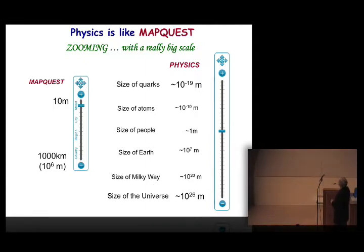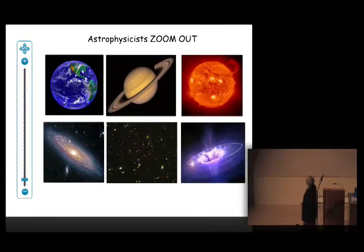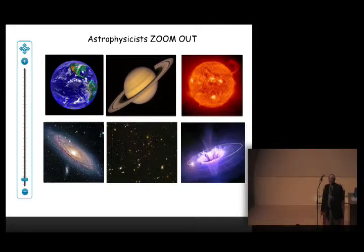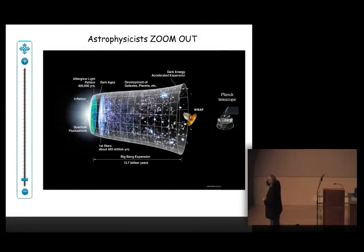So my colleagues in astrophysics zoom out. They zoom way out to look at planets, to look at stars, to look at galaxies, clusters of galaxies, and to try to explore what's going on in black holes and other galactic objects. And they do that with lots of tools. They study the Big Bang and what happened after that with tools such as the WMAP probe and the Planck telescope. That's what we do in our department.